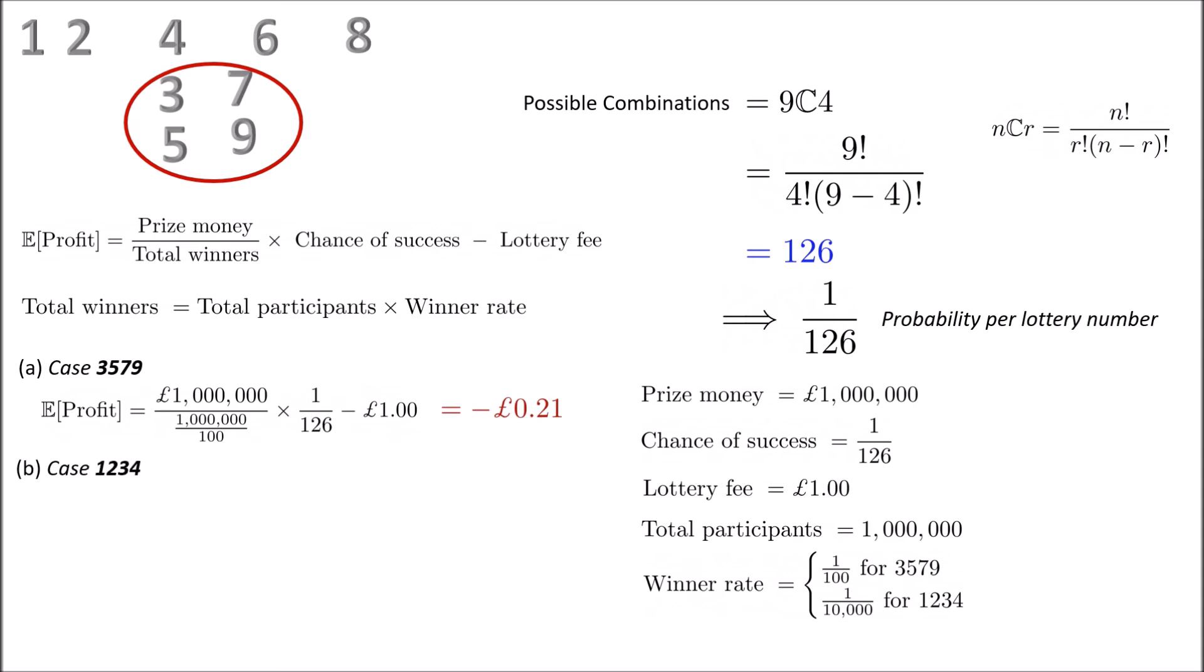In contrast, if someone was to choose 1234 repeatedly, so they are a 1234 person, their expected profit can be calculated to be £78.37, which is quite an income.